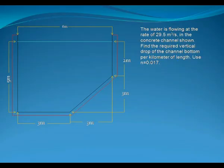Hello everyone and welcome to another engineering solving problem. What we have now is a problem regarding finding the vertical drop of the channel. Our problem is given as: the water is flowing at the rate of 29.5 cubic meters per second in the concrete channel shown. Find the required vertical drop of the channel bottom per